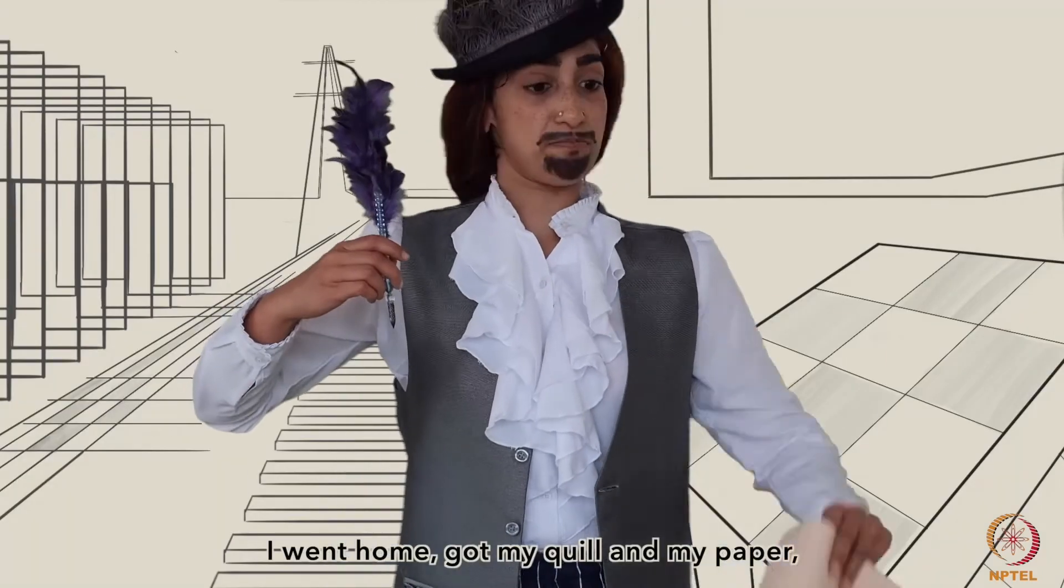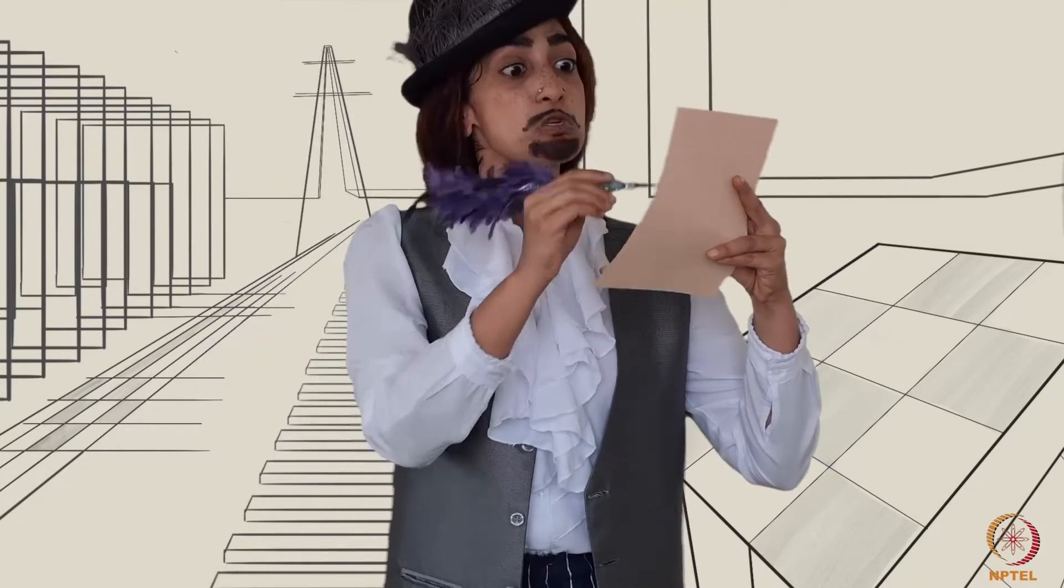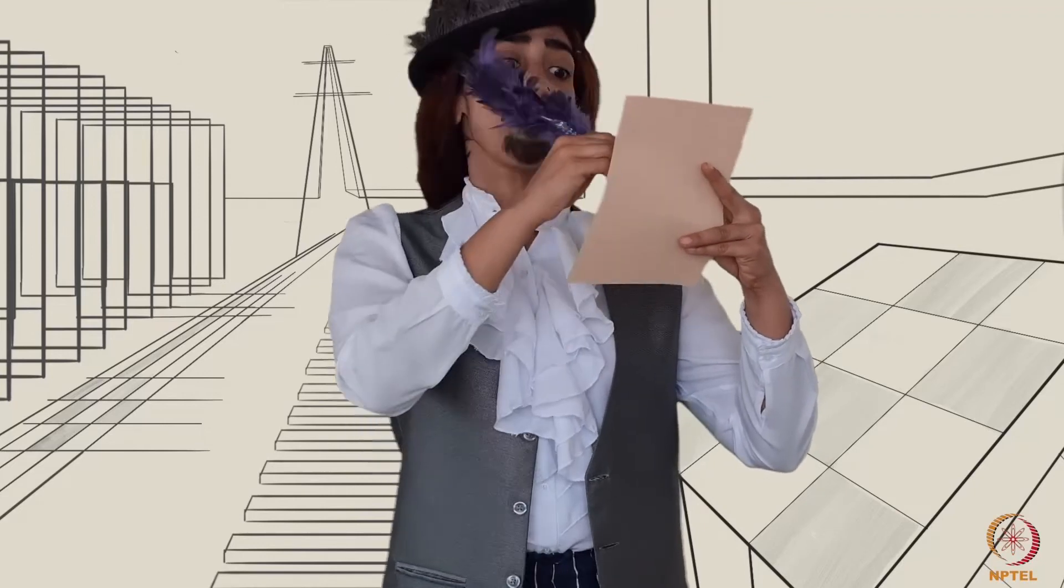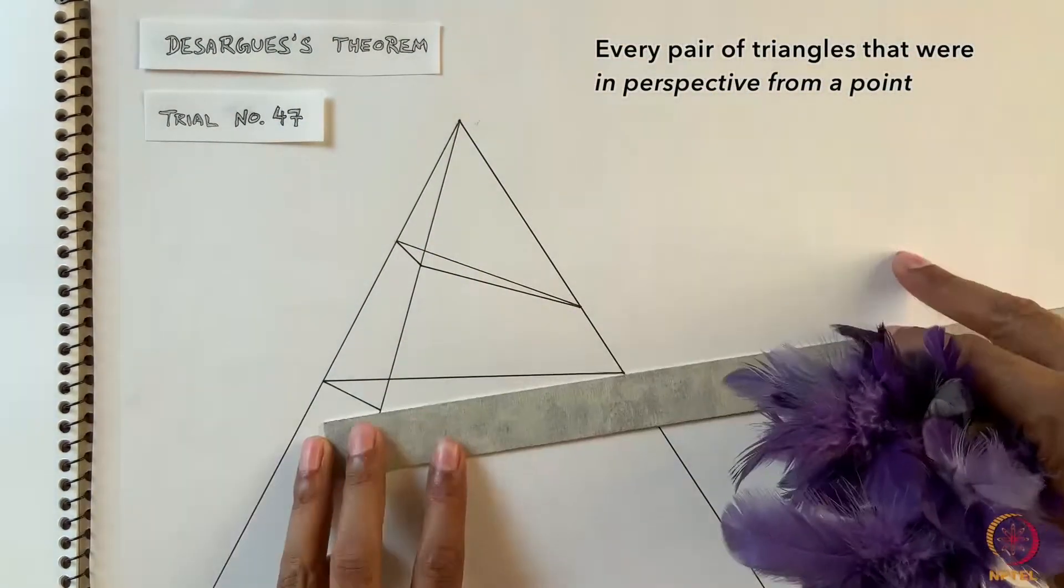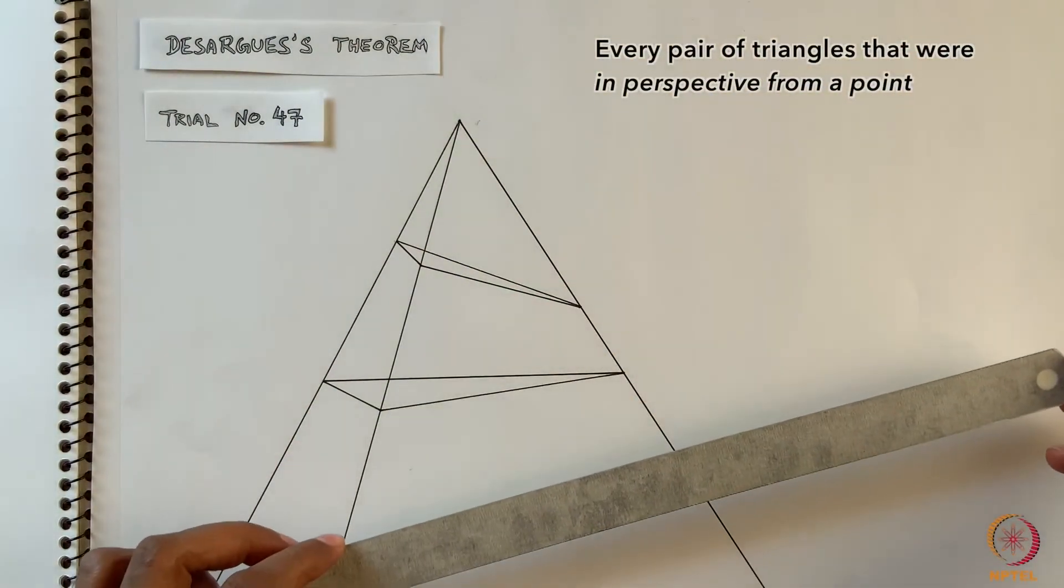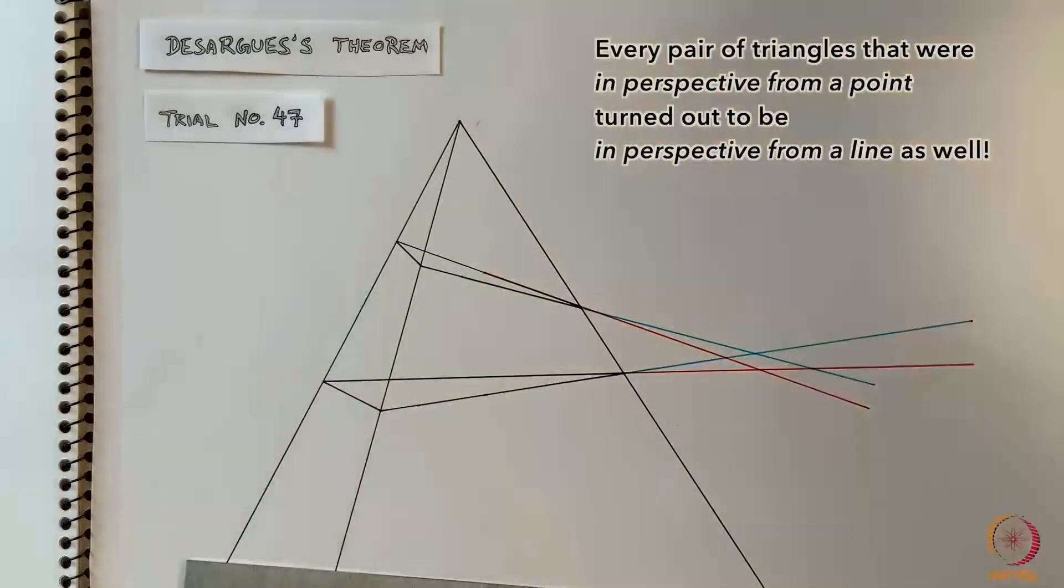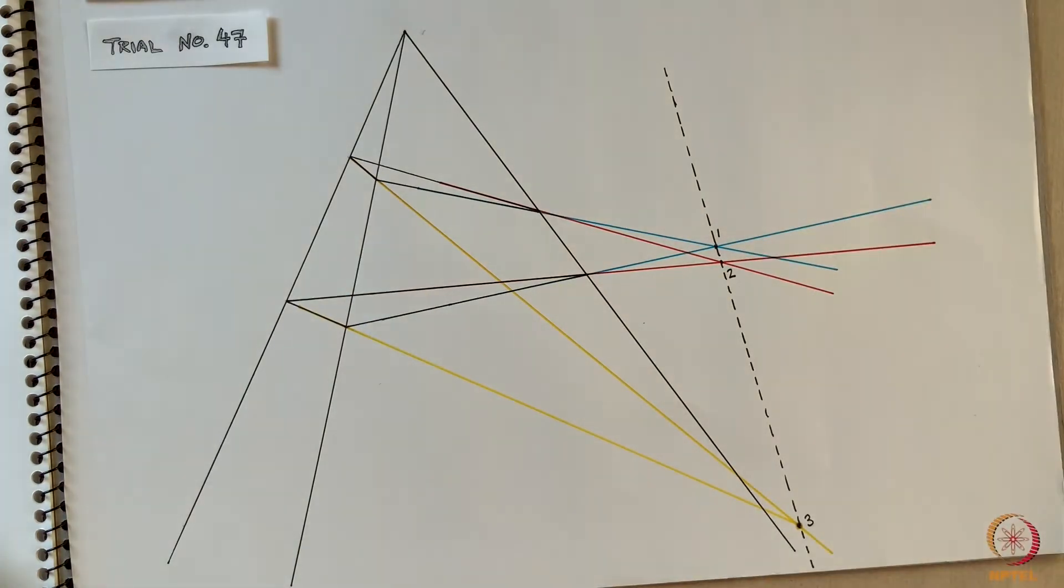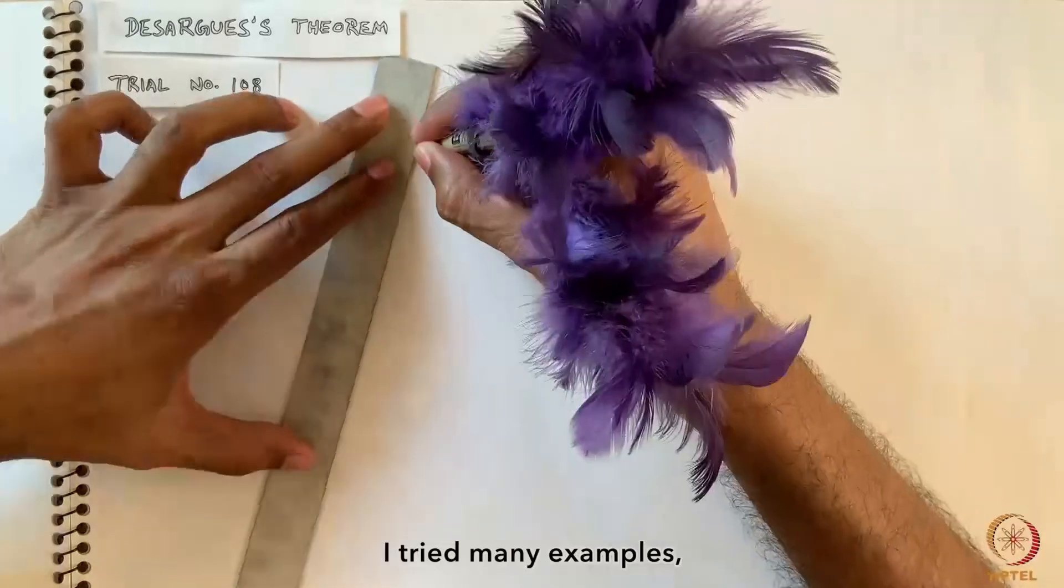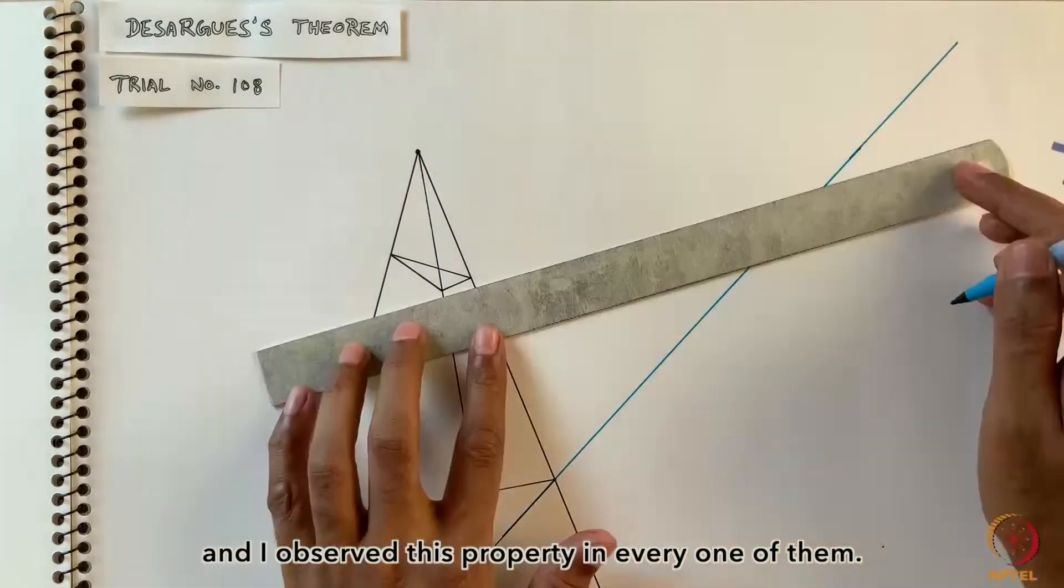I went home, got my coin and my paper and began drawing furiously. Every pair of triangles that were in perspective from a point turned out to be in perspective from a line as well. I tried many examples and I observed this property in every one of them.